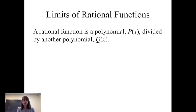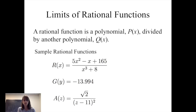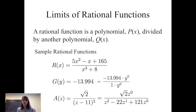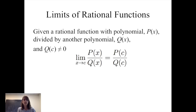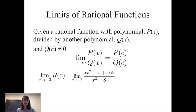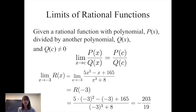We can also evaluate the limits of rational functions. A rational function is a polynomial p of x divided by another polynomial q of x. Given a rational function p of x divided by q of x, as long as q evaluated at c is not equal to zero, the limit of p of x divided by q of x as x gets close to c equals p evaluated at c divided by q evaluated at c. So the limit of the function r evaluated at x as x gets close to negative three can be found by evaluating that rational function at negative three, which in this case is negative two hundred three divided by nineteen.